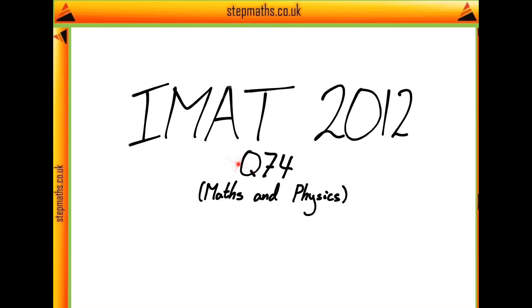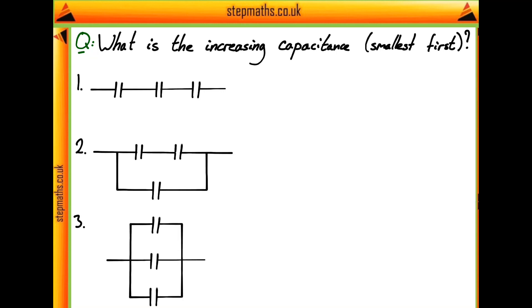Here we're going to look at question 74 from the IMAT 2012 paper. So in this question, we're given three different configurations of some capacitors set up in a circuit, and we're asked what is the increasing order of capacitance, i.e. the smallest first?